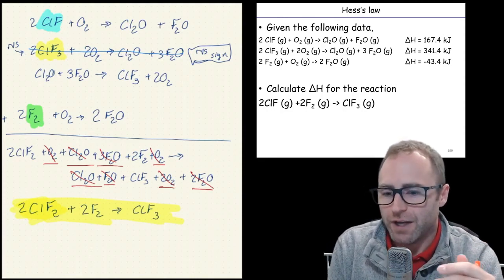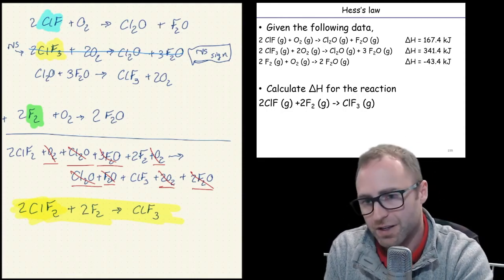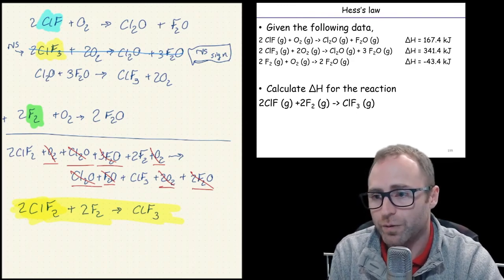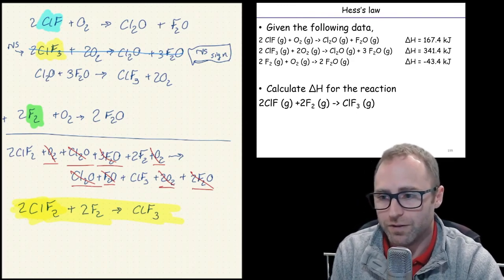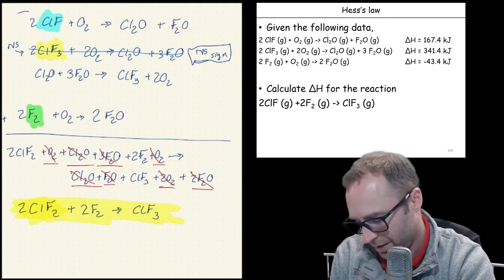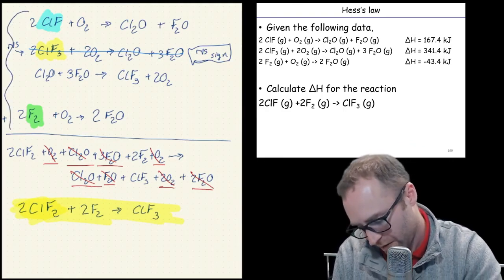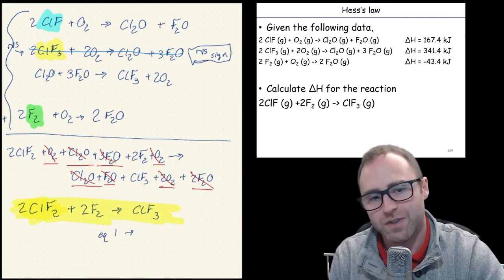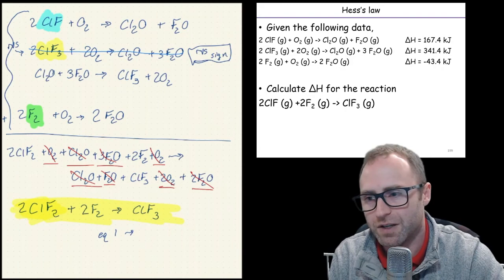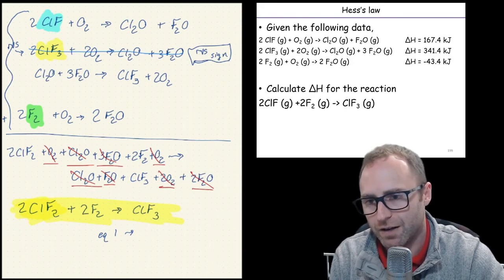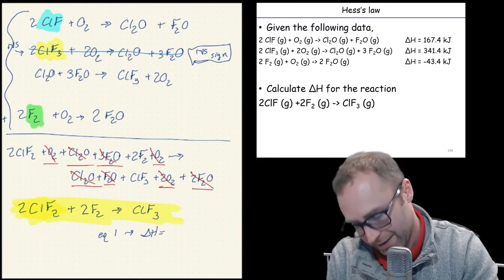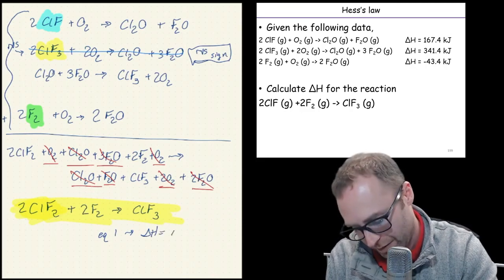The question is asking for delta H. This is where we would write out that delta H stuff and we take into consideration what we did to equation one two and three up here at the top. So equation one we did nothing to it and stayed the same. We didn't reverse it. We didn't have to multiply it or do anything. So that means that delta H for it is going to look exactly like what is given to us in the problem.